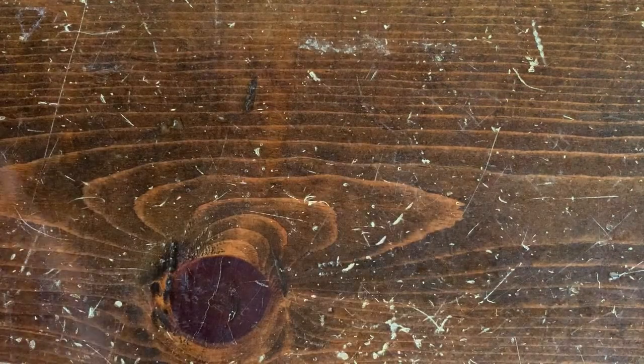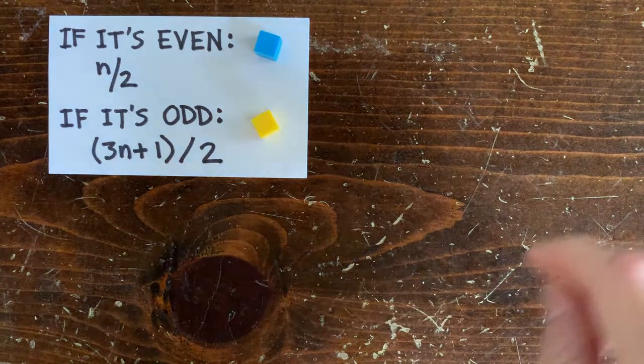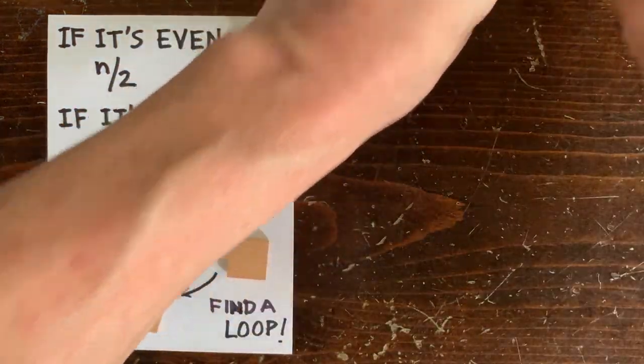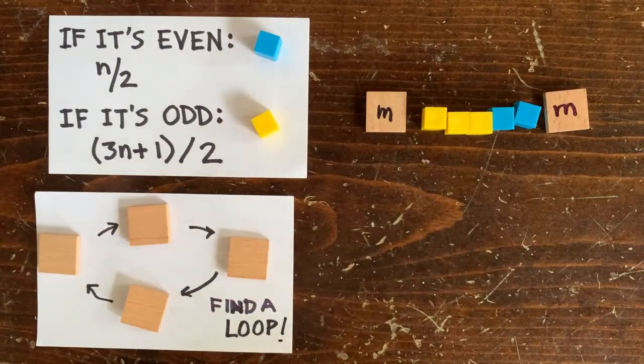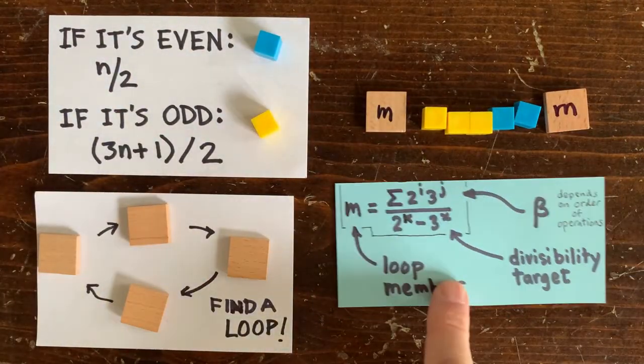So let's remember first that a while back we were hunting for 3n plus 1 loops. If we have a sequence of operations, yellow for 3n plus 1 over 2, blue for n over 2, we figured out how to find the m that loops back on itself when you apply those operations.